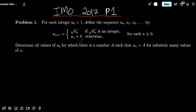This problem asks that if we have an integer a0 greater than 1, and we define a sequence as so: a_{n+1} is equal to the square root of a_n if the square root of a_n is an integer — in other words, if a_n is a perfect square — or a_n plus 3 if a_n is not a square.